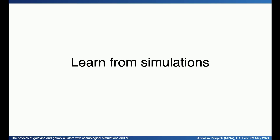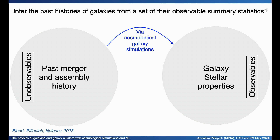Speaking about merger histories, this is one of the first applications I want to show about learning from simulations. This problem was brought forward by a student in my team, Lucas Eisert. We set up the question of whether we can infer the past history of galaxies from a set of their observable summary statistics at any given time. We used the simulations because they connect physics — gravity, the hierarchical growth of structure — to stellar galaxy properties. We were interested in the inverse problem: using galaxy properties as input to recover the number of major mergers, the time of the last major merger, and the mass of the last major merger.